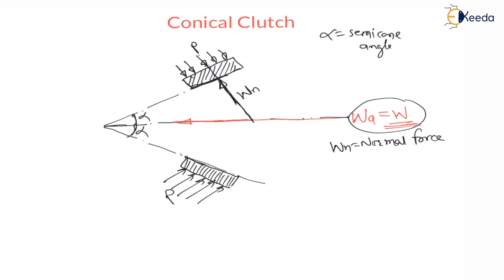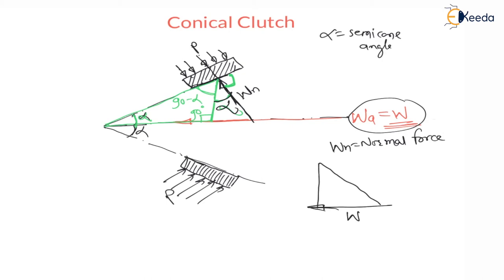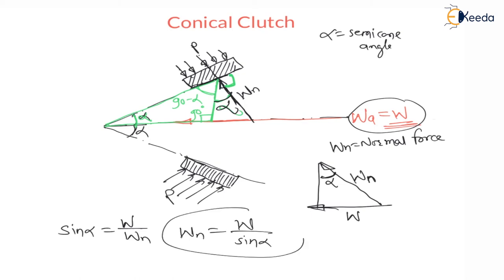If I draw one vertical line, for this triangle this angle is alpha, here it is 90 degrees, therefore this angle will be 90 minus alpha. As it is perpendicular, the remaining angle will be alpha — this is simple trigonometry. Considering the triangle: W is the axial force, WN is the normal reaction, and the angle between them is alpha. Therefore, sin alpha equals W divided by WN, so the normal reaction WN equals W divided by sin alpha.